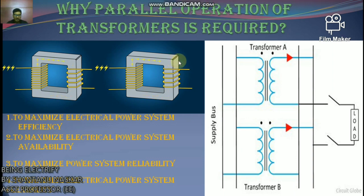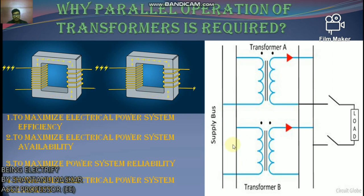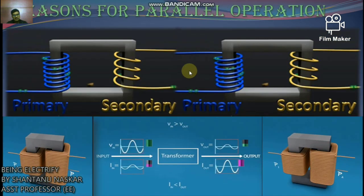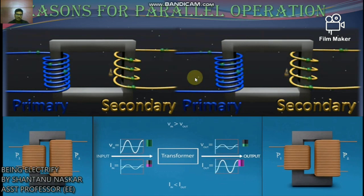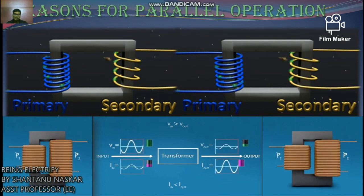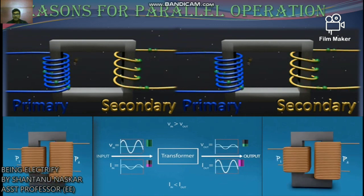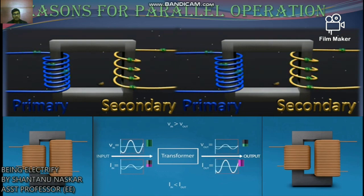A transformer is said to be in parallel operation when its primary winding is connected to a common voltage supply and its secondary winding is connected to a common load. The connection diagram for parallel operation is shown here. Parallel operation increases the efficiency and makes the system more flexible and reliable, but it increases the short-circuit current. It is also impractical and uneconomical to have a single large transformer for heavy loads, so connecting multiple transformers in parallel is the wise decision.